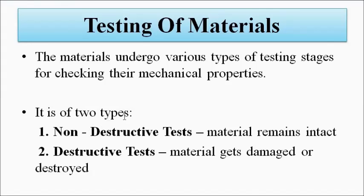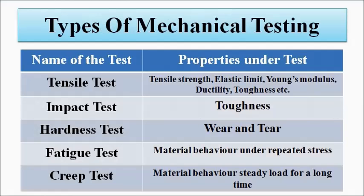Testing done on engineering materials for the examination of mechanical properties is of two types: destructive, in which the material gets damaged, and non-destructive, in which it remains intact. Various types of mechanical testing are done depending on the properties required to be tested — tensile test, impact test, hardness test, fatigue test, and creep test. Here we will discuss hardness.